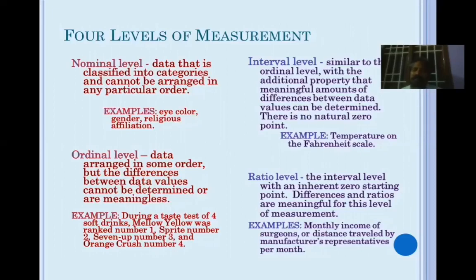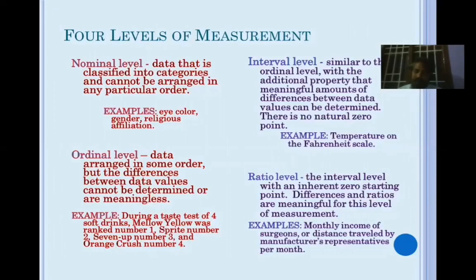The difference between interval and ratio is simple. At the ratio level, there is an inherent true zero starting point — if a person is not working, their income is zero; if a child writes nothing on an exam, their mark is zero. When there is a true zero, that is ratio data. When there is no true zero — for example, zero degrees Celsius doesn't mean there is no temperature — that is interval scale. Statistically, both are treated as scale-level data.